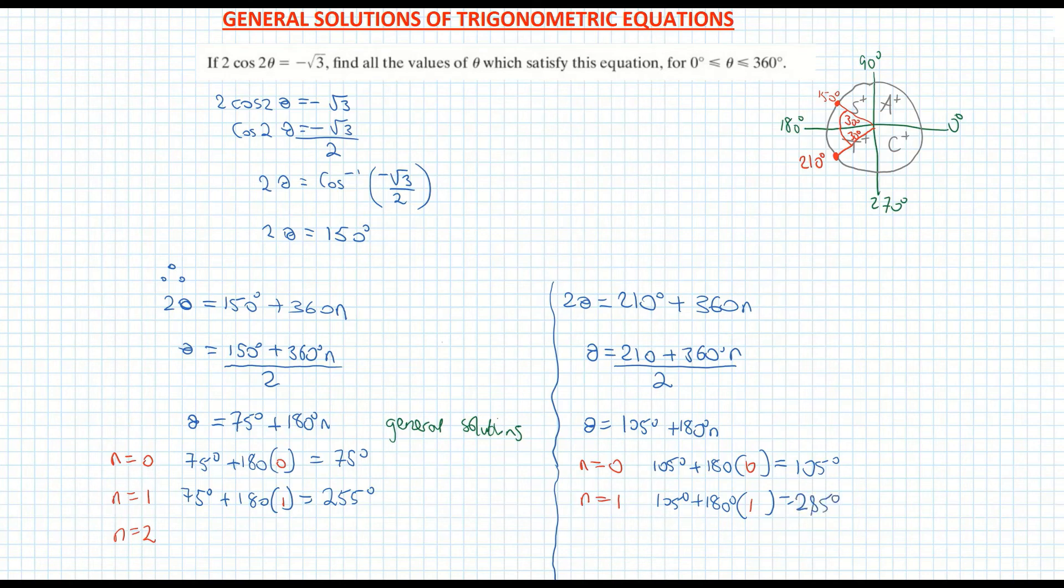OK, all four angles so far are less than 360. I'm now going to try n is equal to two. So I'm going 75 degrees plus 180 times two, which is basically 360. And 360 plus my 75 is giving me 435 degrees.